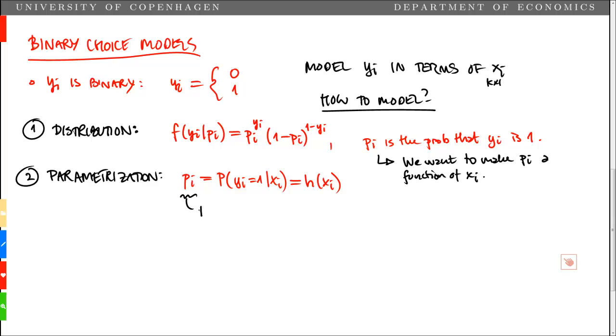Note that pi is a probability, so that implies that pi must be bounded between 0 and 1. That implies that we have to choose our function h of xi so that it is also bounded between 0 and 1.